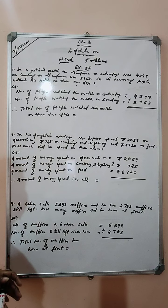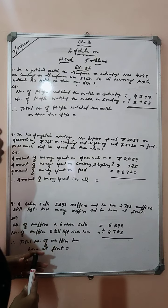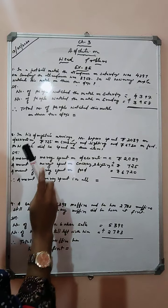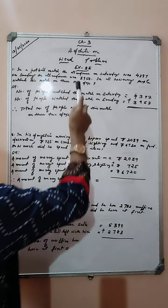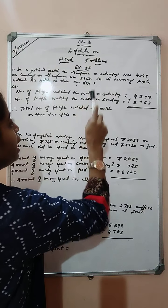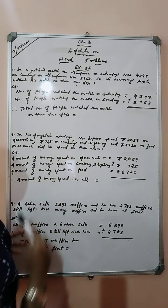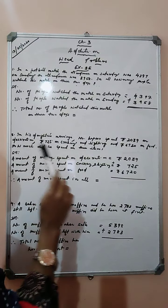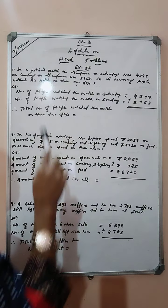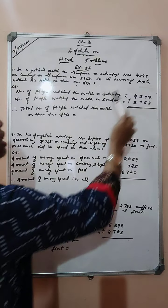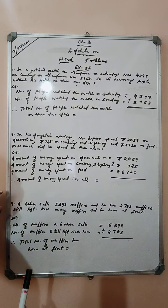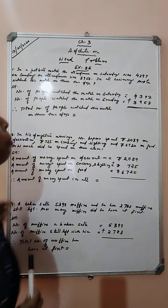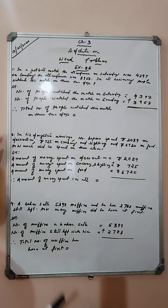According to the question, there was a football match. On Saturday, 4,397 people watched the match. On Sunday, 3,958 people watched the football match. So, total, how many people watched the football match in these two days? We need to calculate. We have to add both the numbers. So let us write the statement first.